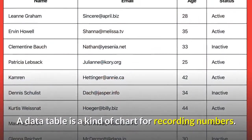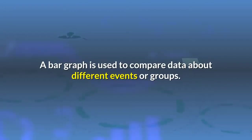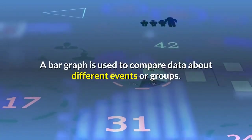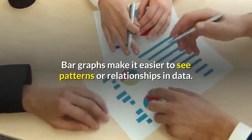A data table is a kind of chart for recording numbers. A bar graph is used to compare data about different events or groups. Bar graphs make it easier to see patterns or relationships in data.